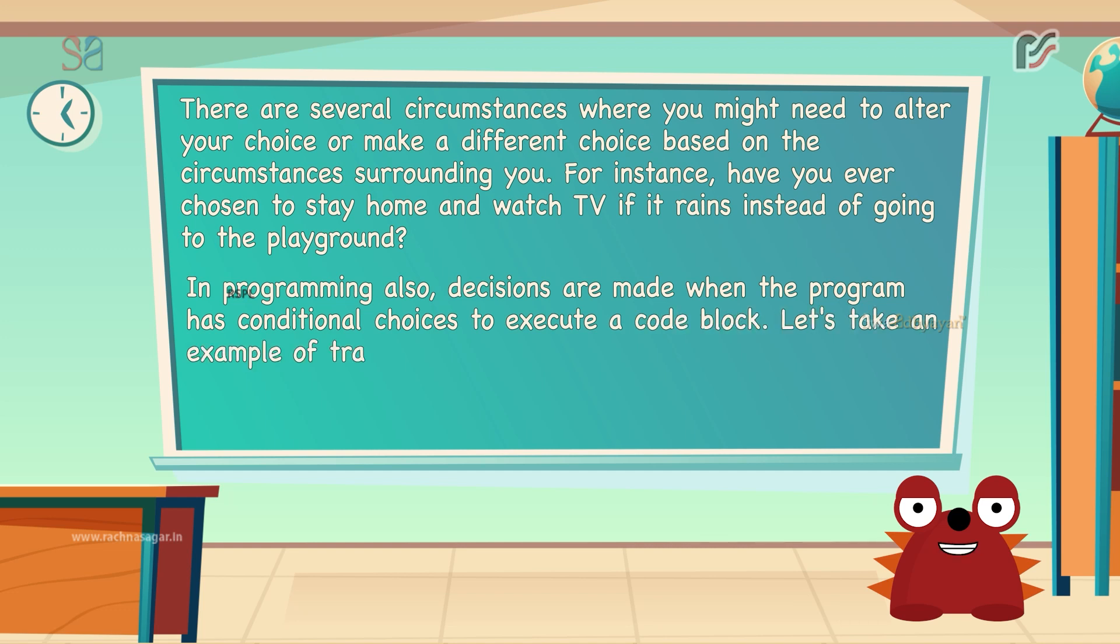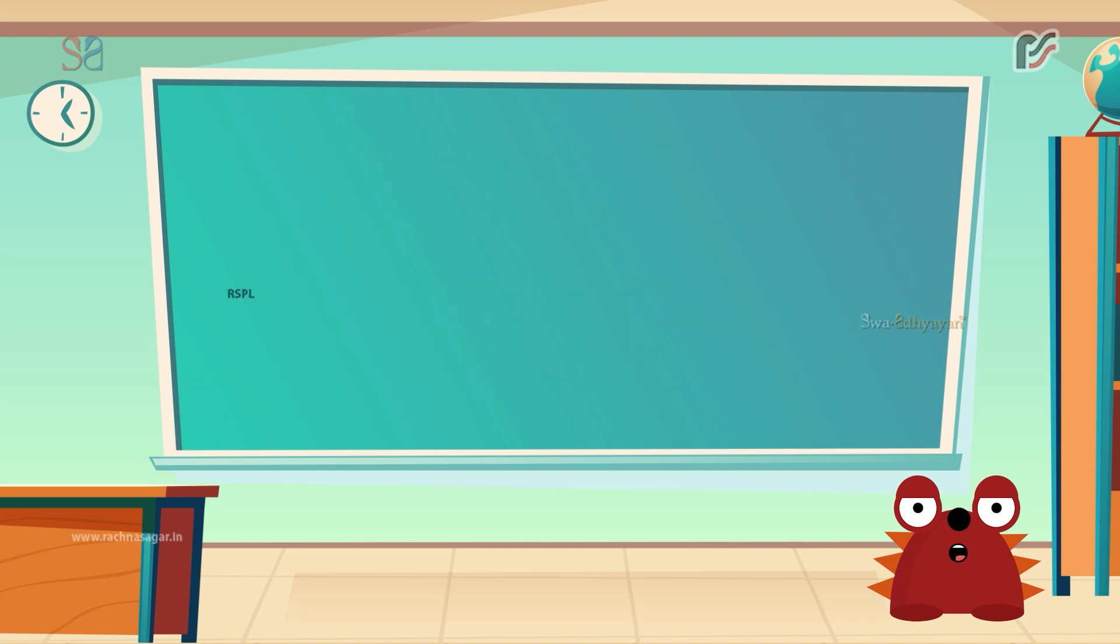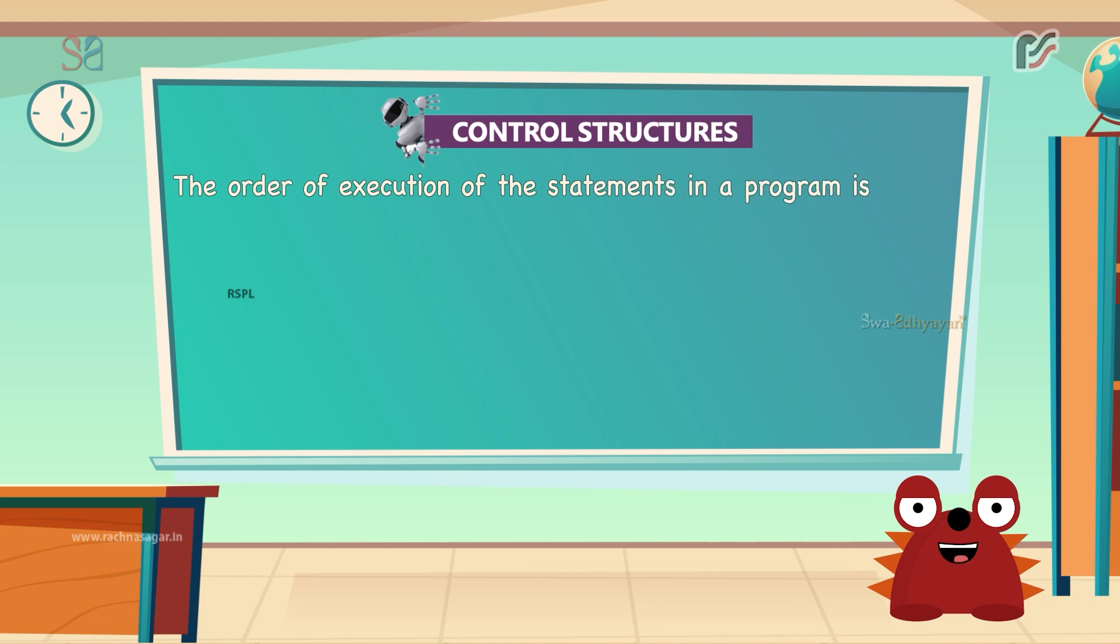Let's take an example of traffic signals. When different colors of lights are lit up in different situations based on the conditions of the road or a specific rule. Let us start learning about programming with control structures. The order of execution of the statements in a program is known as the flow of control. The flow of control can be implemented using control structures.